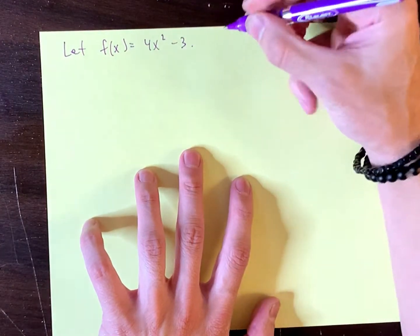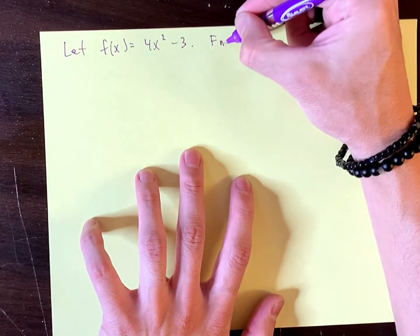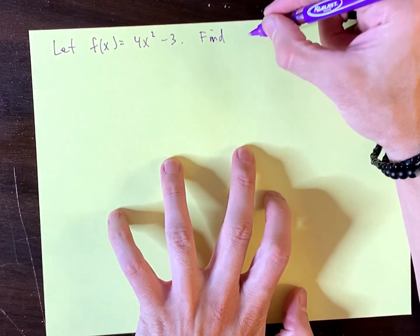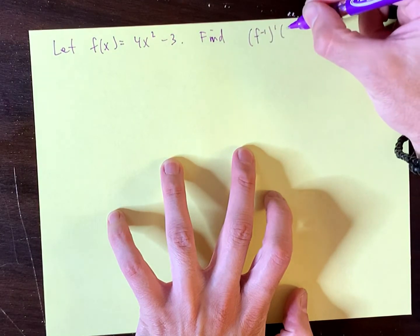4x squared minus 3. And they want us to find the following. So let f of x equal that. Find f inverse prime of 97.